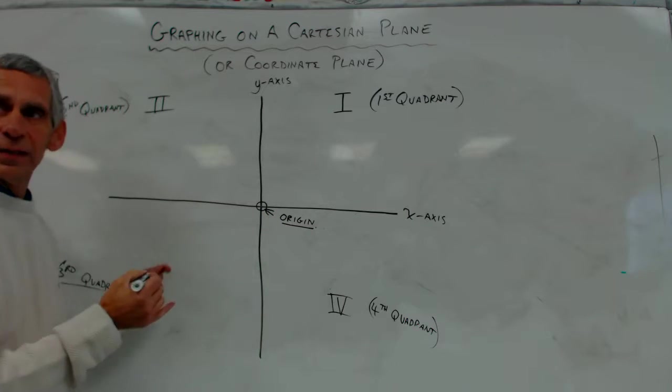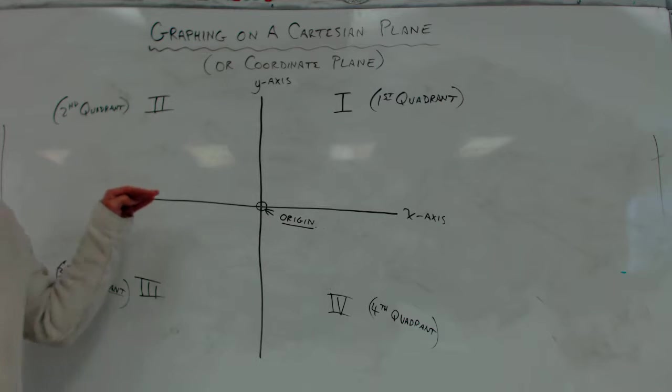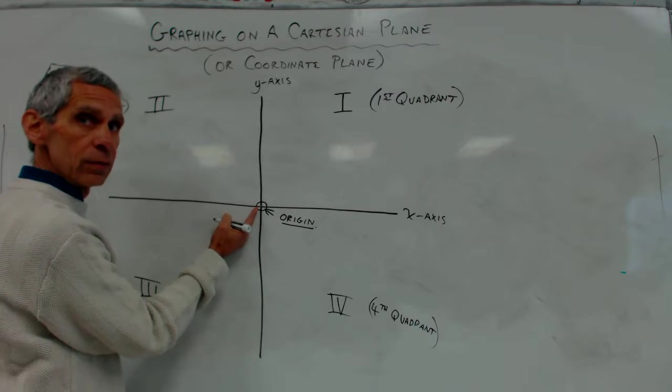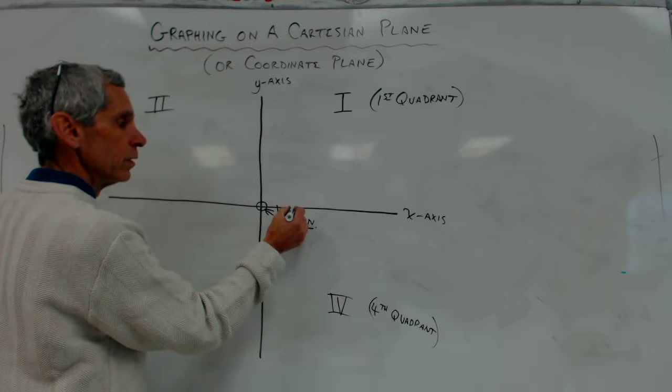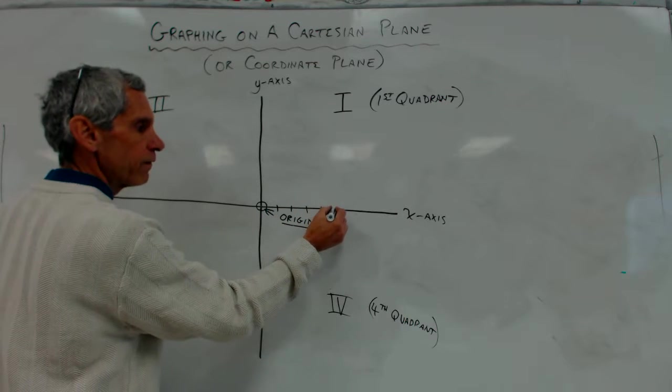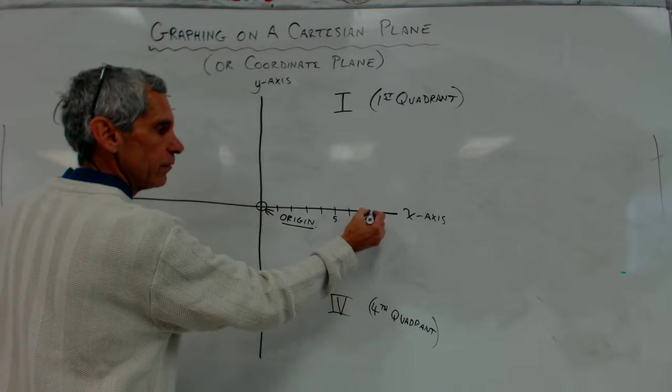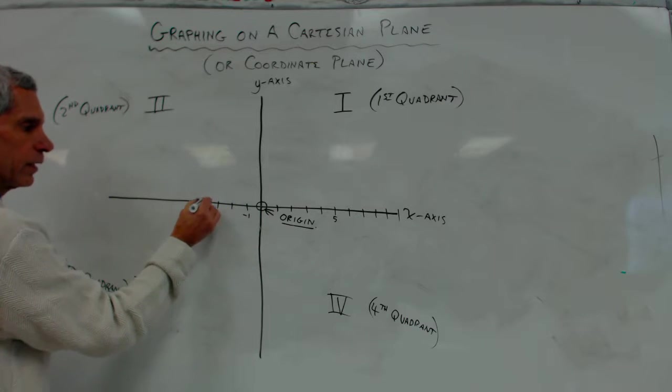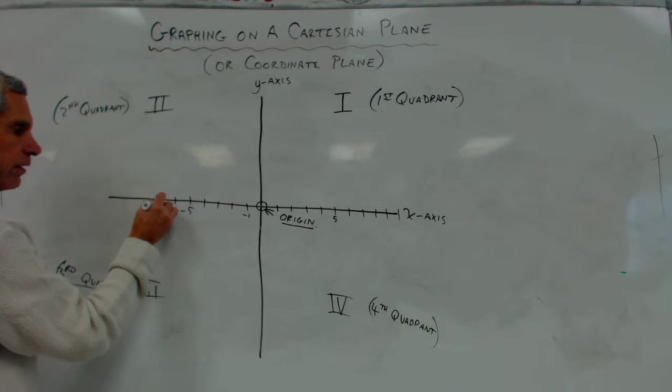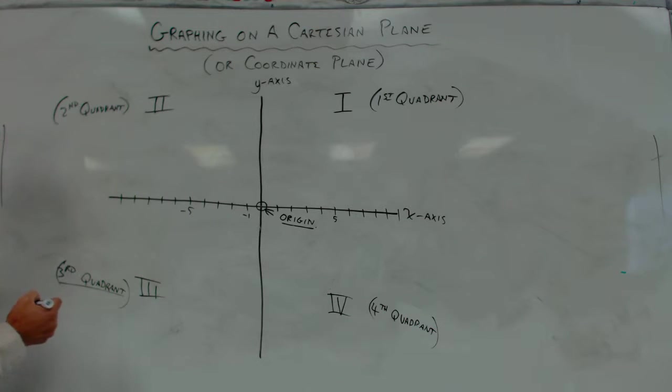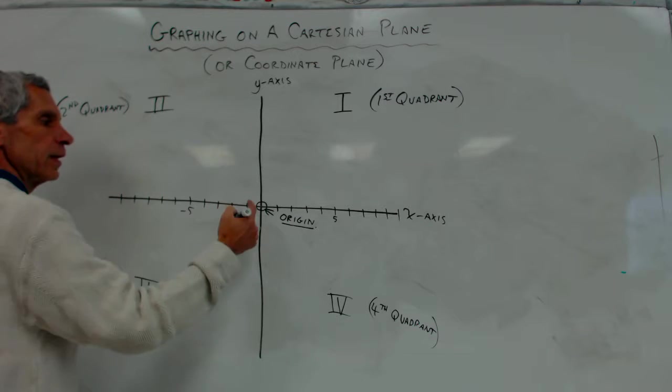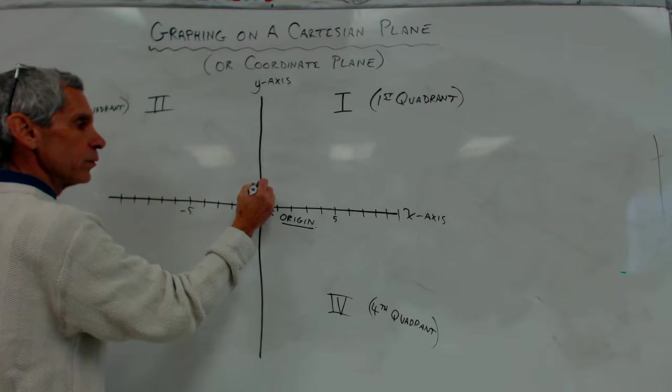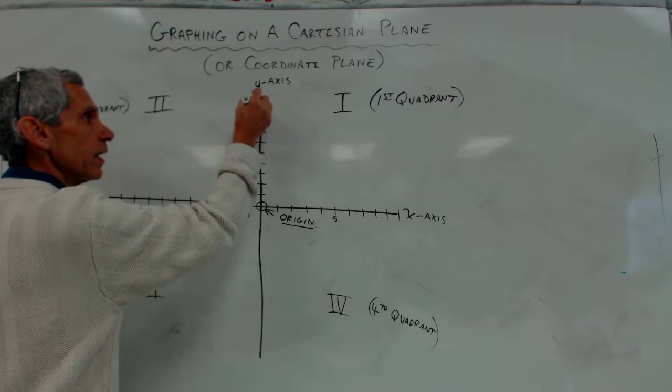Now, with these, basically, these are two number lines. It's a horizontal number line and a vertical number line, right? And so, this number line, this is zero on my x-axis. So, here's one, two, three, four, five, six, seven, eight, nine, ten. Okay? This is negative one, negative two, negative three, negative four, negative five, negative six, negative seven, negative eight, negative nine, negative ten.